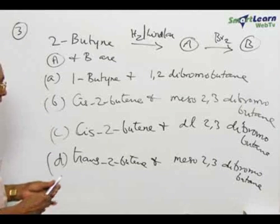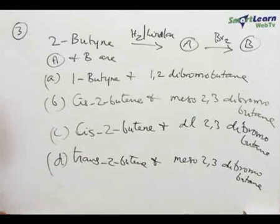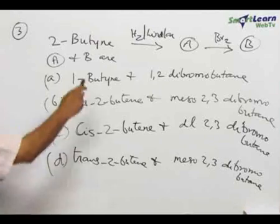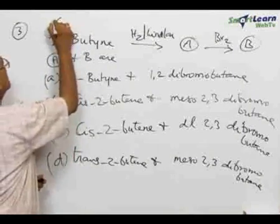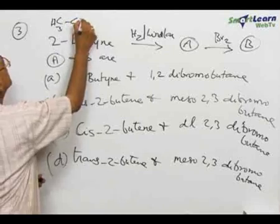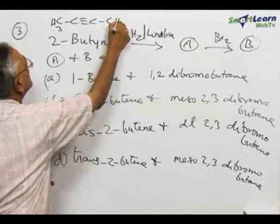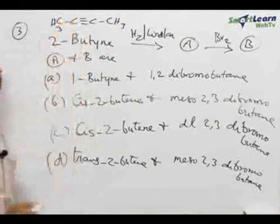We go to the third question which relates to the hydrogenation of a triple bonded compound. 2-butyne is a compound containing 4 carbon atoms with the triple bond between 2 and 3 positions.